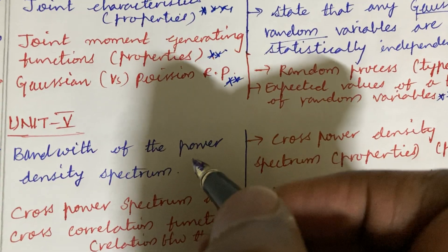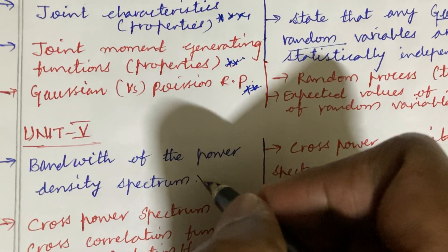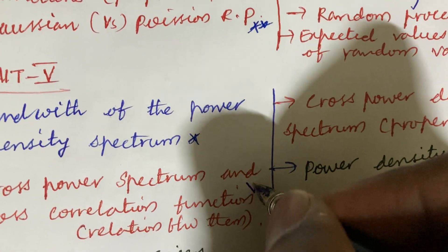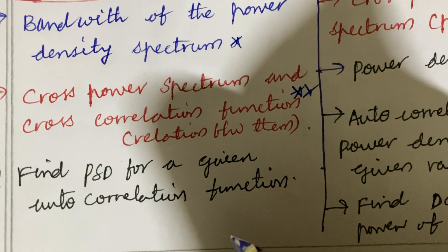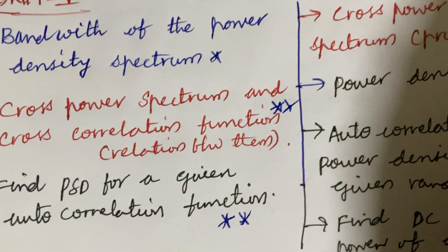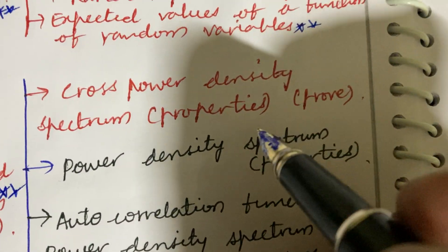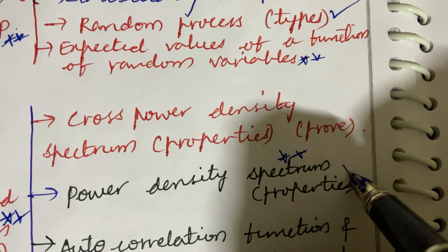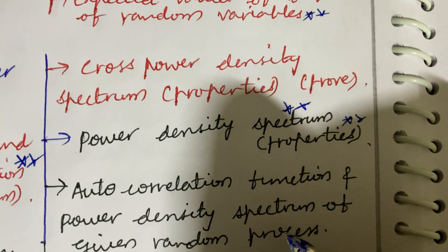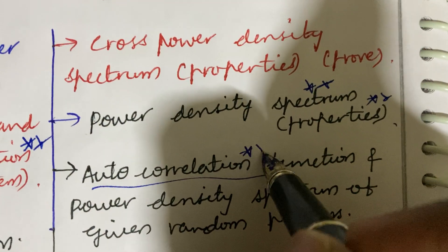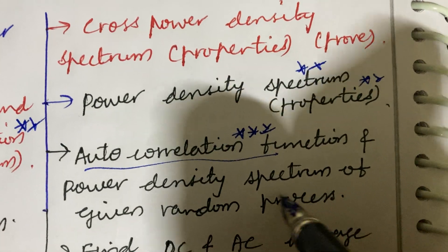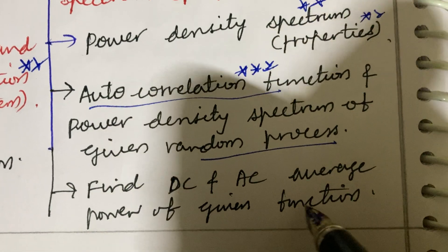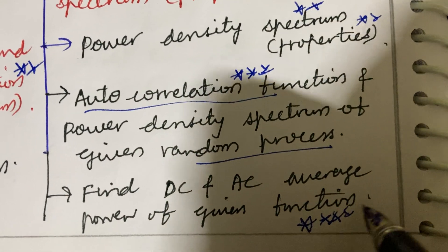Later I have come up with Unit 5. Bandwidth of the power density spectrum — define and explain. Cross power spectrum as well as cross-correlation function and the relation between them is a top question. Find the PSD for a given auto-correlation function — this problem is a damn sure question. Gaussian power density spectrum — state, prove, and its properties. Power density spectrum — state, prove, and properties. Auto-correlation function is a damn sure and sure-shot question which may occur in the question paper. Power density spectrum of a given random process, and finding DC and AC average power of a given function, are top questions.